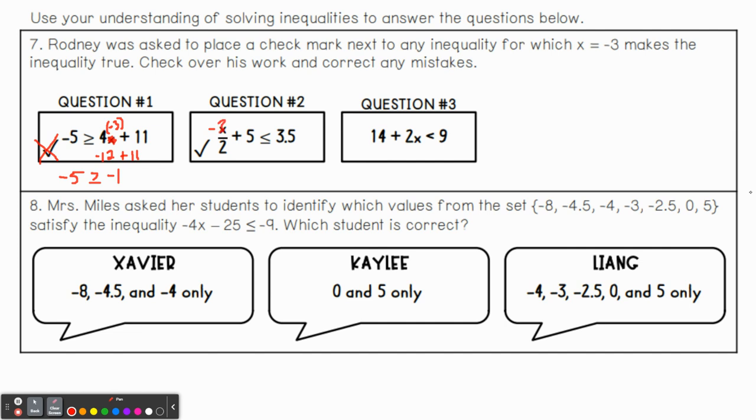What if we plug in negative 3 here? Well, let's see. Negative 3 over 2 plus 5 is less than or equal to 3.5. Would that be true? Well, negative 3 over 2 is the same as negative 1.5. Let's see. If we add that to 5, we would end up getting 3.5. Is 3.5 less than or equal to 3.5? Well, it's equal to. So yeah, he is correct on this one. Hey, Rodney got one right. What about the last one? If we make this a negative 3, so then we'd have 14 minus 6. So 14 minus 6 gives us 8. Is 8 less than 9? Yeah, it is. So this one actually works as well. So question 2 and 3 work, question 1 does not. So Rodney was incorrect on 1 and incorrect on the last one.